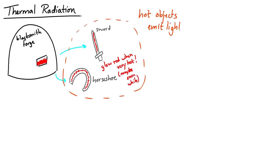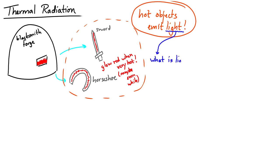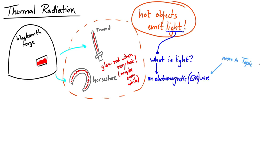Let's back up for a moment. What is light? Let's remind ourselves. Light is an electromagnetic wave. If you haven't seen that yet, you might see that later in topic C. But light is one form of electromagnetic wave, and electromagnetic waves come in many different kinds.